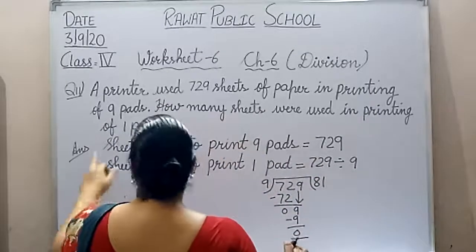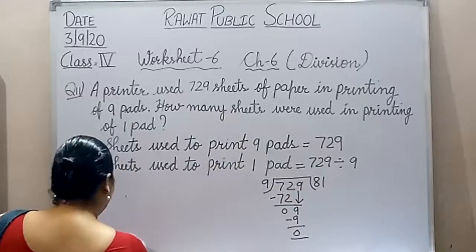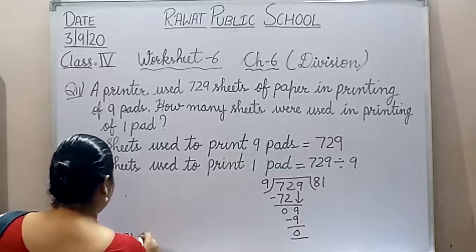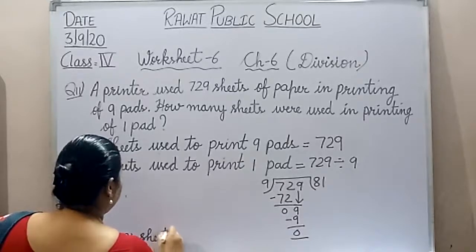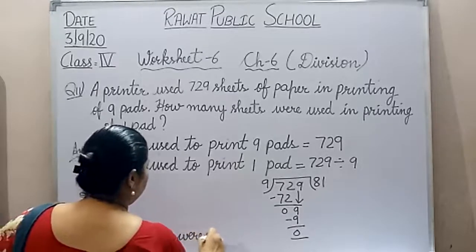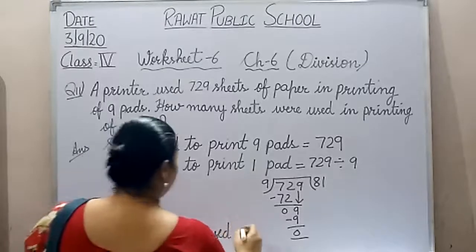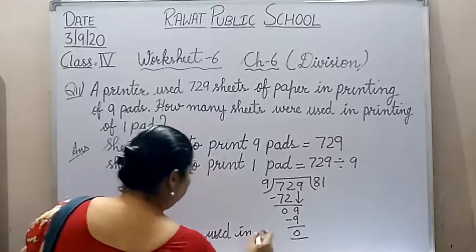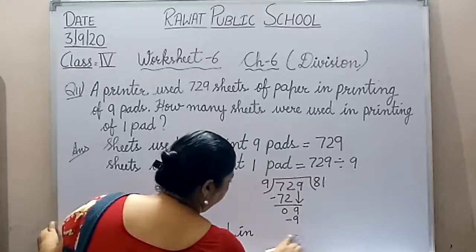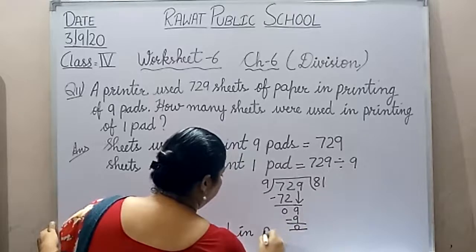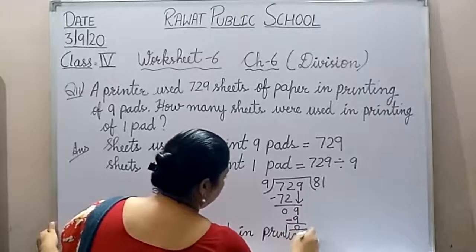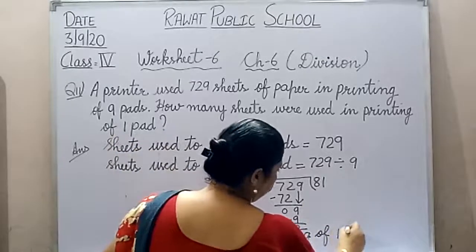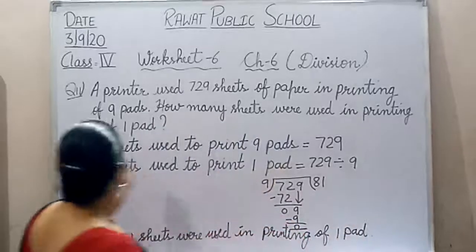The question asks how many sheets were used in printing of one pet. Write down the answer: 81 sheets were used in printing of one pet. Write down question number 11 students.